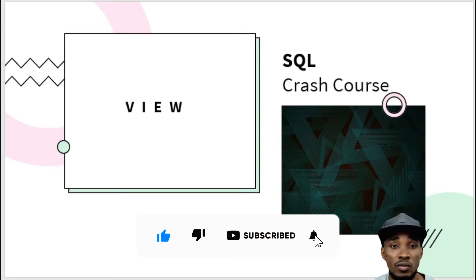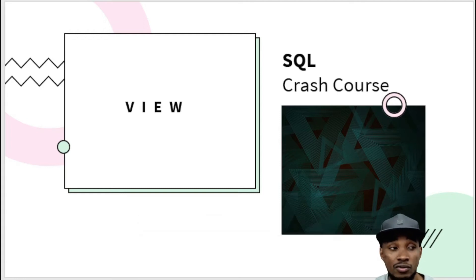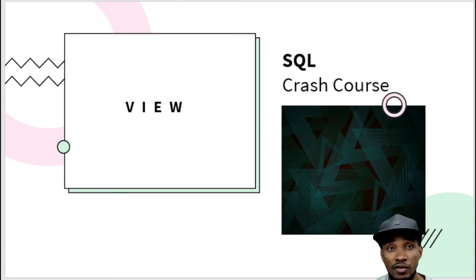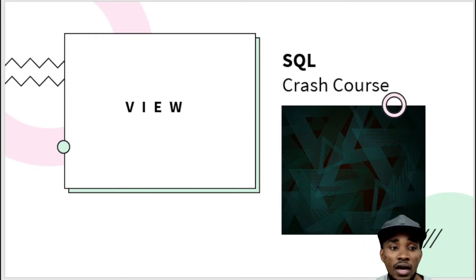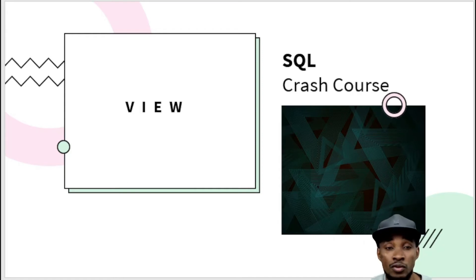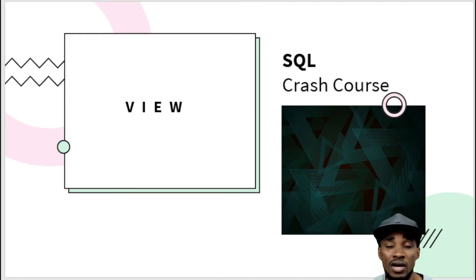We have different types of views. We've got the indexed view, the partition view, and the system view. In this demo, we're just going to be looking at the basic view — how you can set up a view and how it actually works.